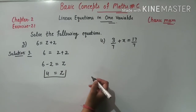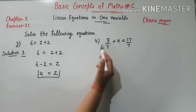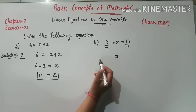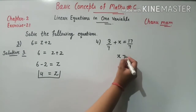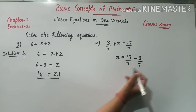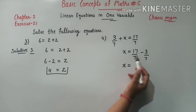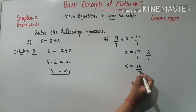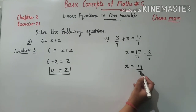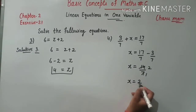Similarly, question 4: x की value find करनी है. 3/7 plus का है, right side जाएगा तो minus में change हो जाएगा. Simplify करेंगे: x = 14/7. इसे simplify करेंगे — 7 की table पर cut होगा: 7×2=14, so x की value है 2.